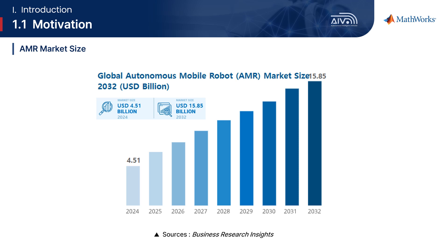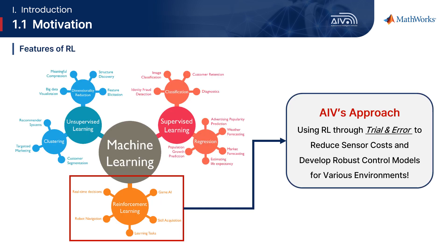According to a presentation by Business Research Insights, the autonomous mobile robot market is expected to reach $15.8 billion by 2032. In line with this trend, we chose this topic to build foundational skills in AMR control using artificial intelligence as undergraduate students. Among the three main approaches in machine learning, we decided to utilize reinforcement learning. Through the design of a reward function based on trial and error, Team A aims to develop a control model that is cost-efficient by reducing sensor dependency and robust to various environmental conditions.